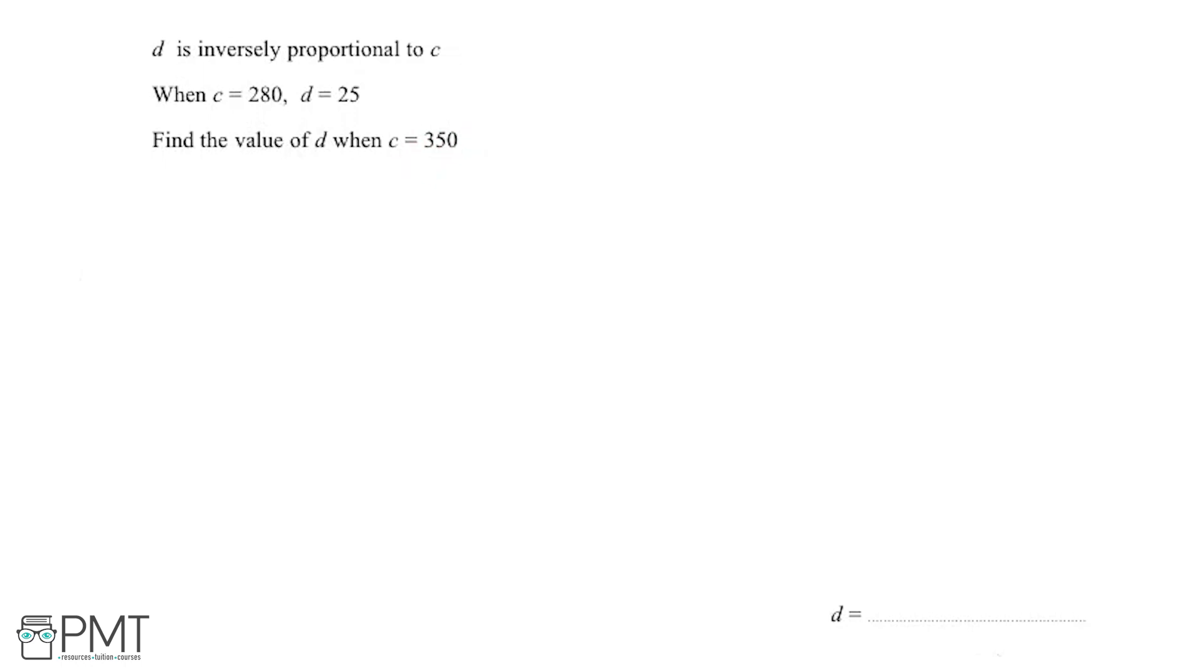So I'm going to write it out like this. We've got D is inversely proportional to C. This is a mathematical way of writing it. What we've written here mathematically is D is inversely proportional to C.